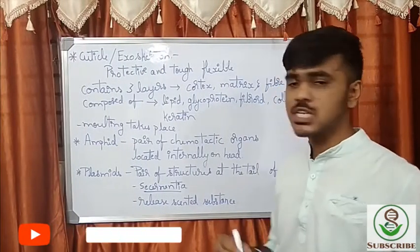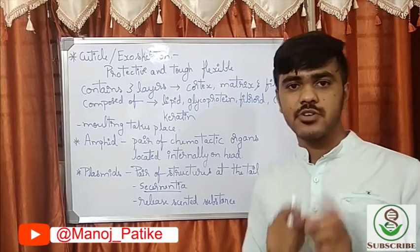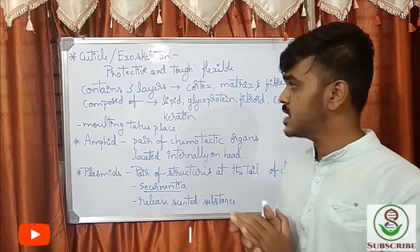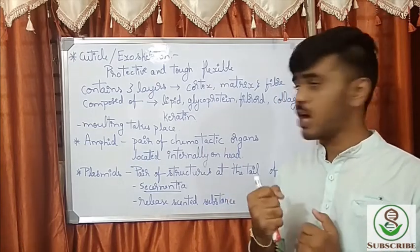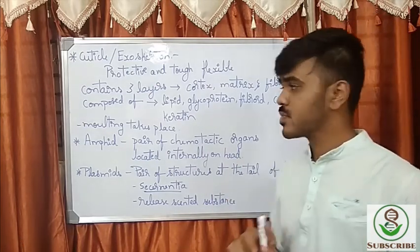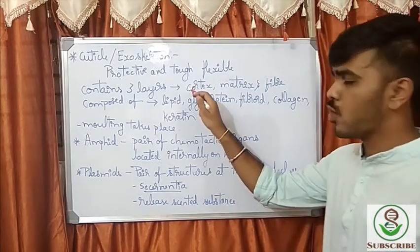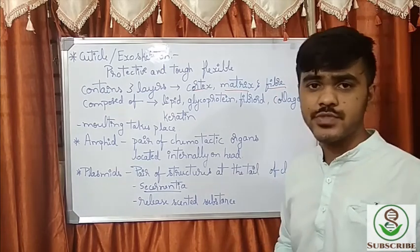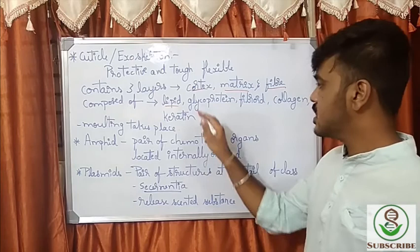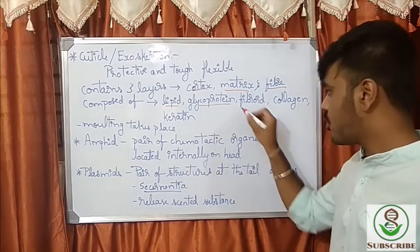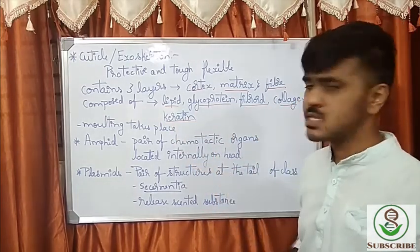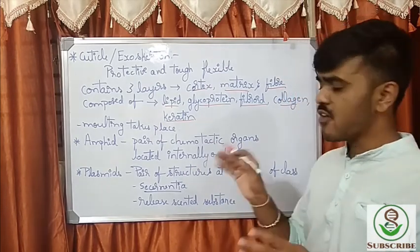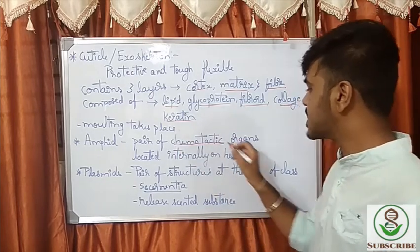The outer tube has a cuticle layer that is very protective, tough, and flexible. It contains three layers: the cortex, matrix, and fiber layer. It is composed of substances like lipid, glycoprotein, fibroid, collagen, and keratin. In nematodes, molting takes place. There is also a pair of chemotactic organs that are chemically active, located internally in the head of the nematode.